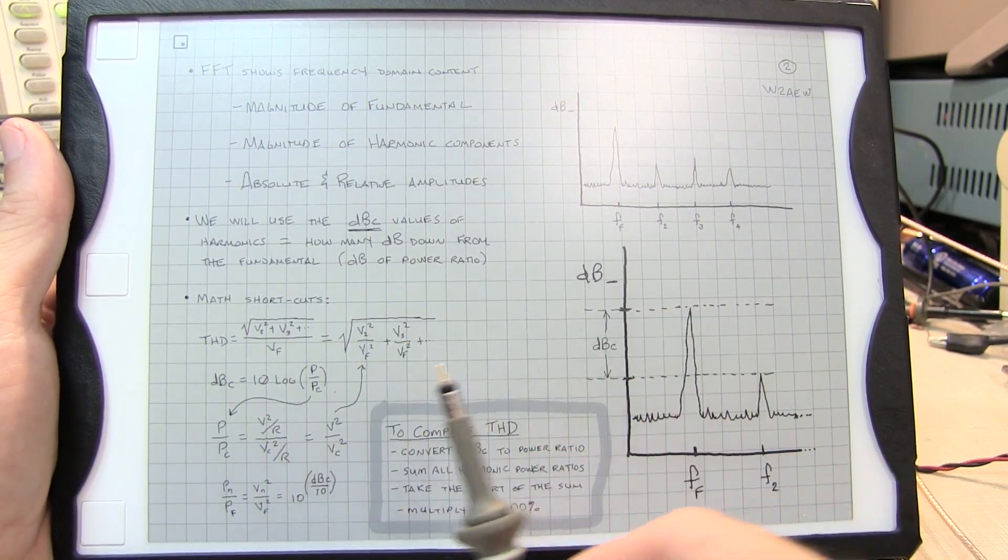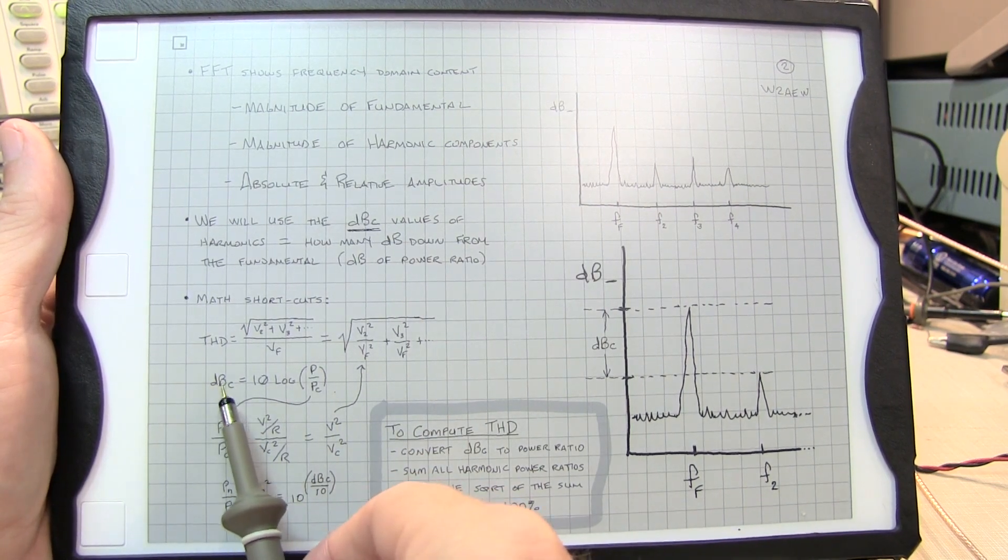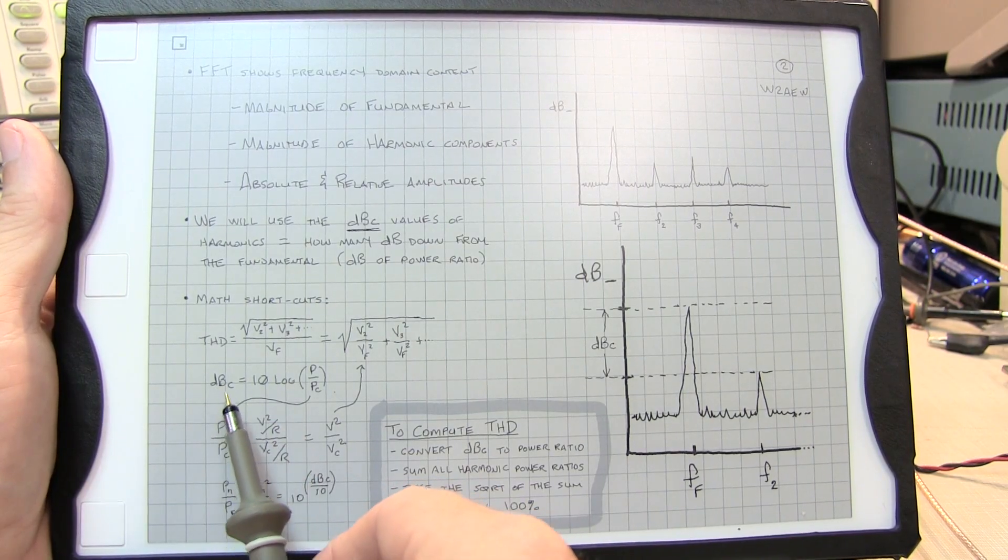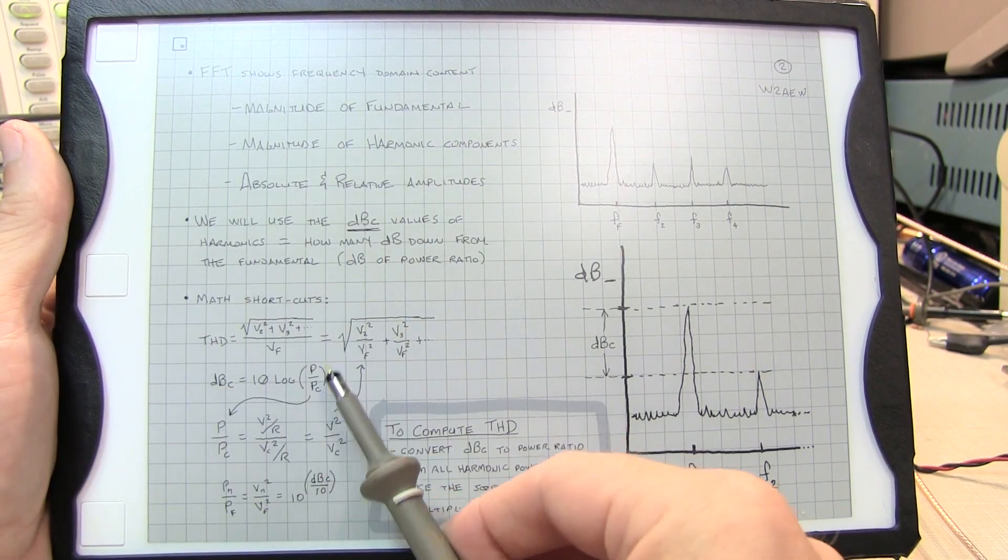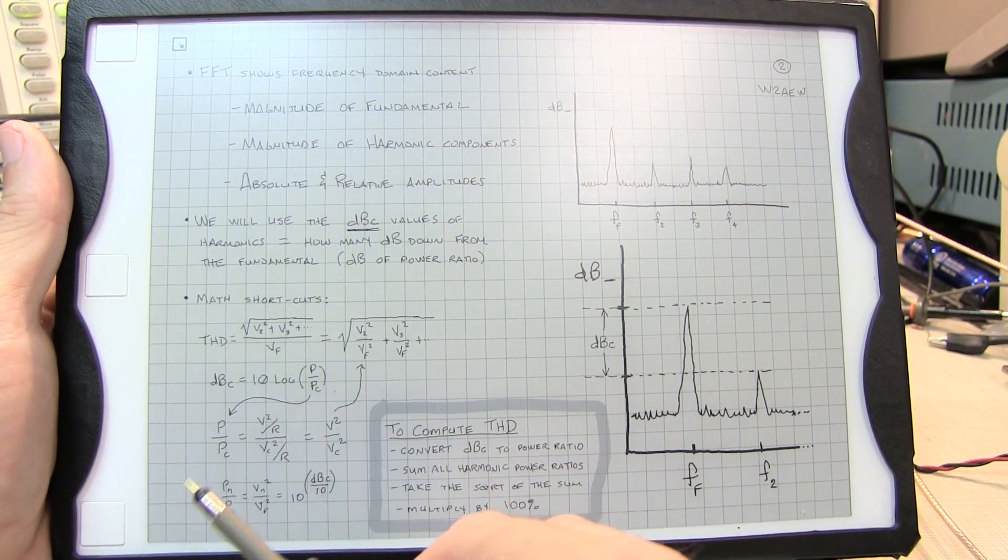Now let's also take a look at the dBc value. The dBc value is a logarithm of the power ratio. So dBc is 10 times the log of some power divided by the power of the carrier, or in our case the fundamental.